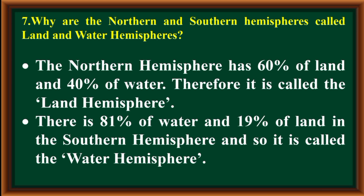Why are the northern and southern hemispheres called the land and water hemispheres? The northern hemisphere has 60 percent of land and 40 percent of water, therefore it is called the land hemisphere. There is 81 percent of water and 19 percent of land in the southern hemisphere, so it is called the water hemisphere.